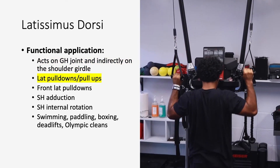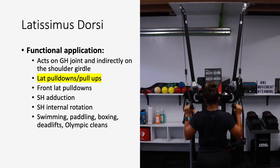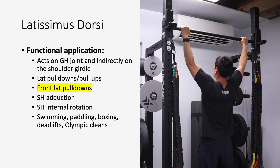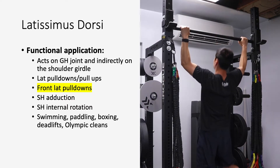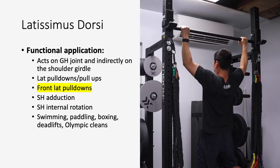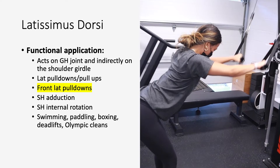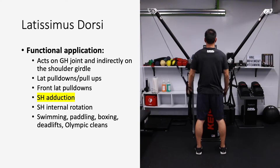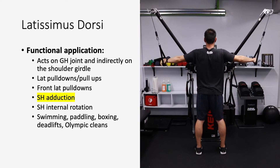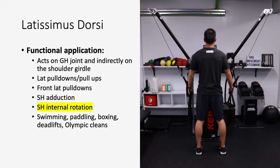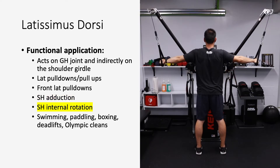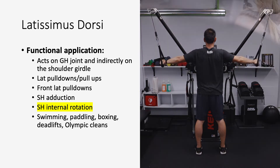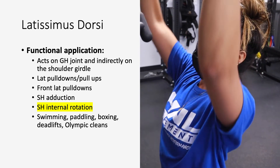We use the lats in a lot of shoulder adduction movements — lat pulldowns, pullups. If you think about it as a shoulder extensor when you're in front of your body, then we have front lat pulldown variations and cable shoulder adduction movements. Also, when you think about any lat exercises, there is an internal rotation component at the shoulder joint.